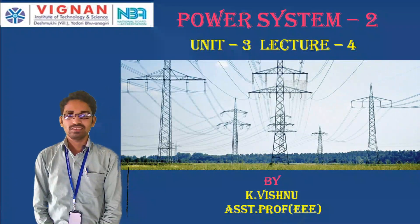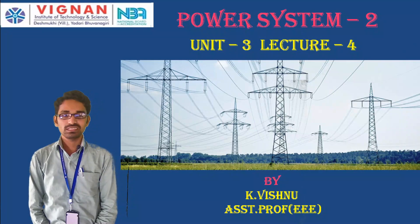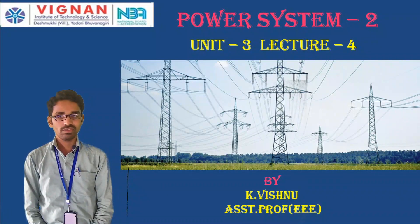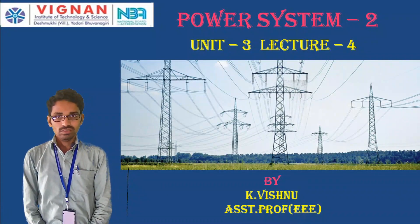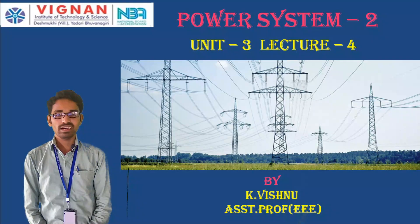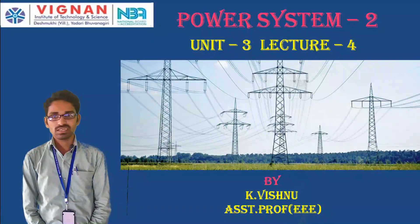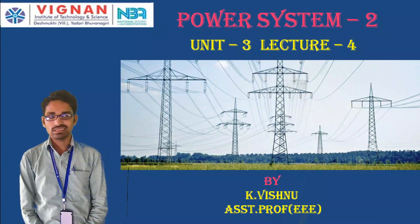Hello everyone. Today we are going to see Power Systems Unit 3, Lecture 4. The topics covered are: line connected to a cable, line connected to a D-junction, and line terminated through a capacitance.